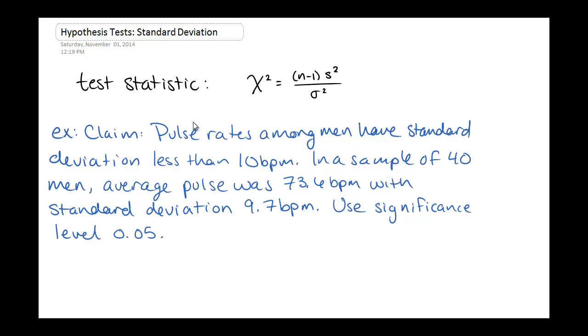So again, this is very similar to the other ones we've already looked at. We do have a different test statistic now, and the test statistic for standard deviations uses the chi-squared distribution.